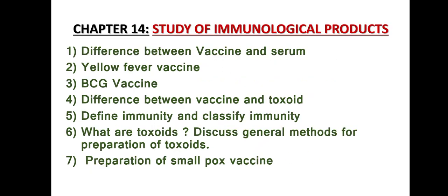The last chapter of first year Pharmaceutics 1 is chapter fourteen: Study of Immunological Products. There are seven important questions. Question one: Difference between vaccine and serum. Question two: Yellow fever vaccine. Question three: BCG vaccine. Question four: Difference between vaccine and toxoid. Question five: Define immunity and classify immunity. Question six: What are toxoids? Discuss general methods for the preparation of toxoids. Question seven: Preparation of smallpox vaccine.